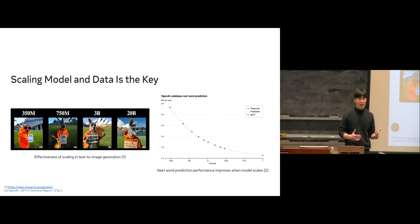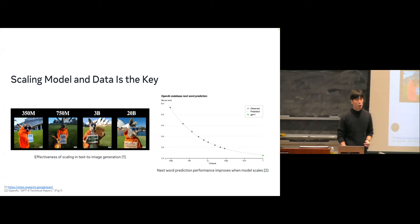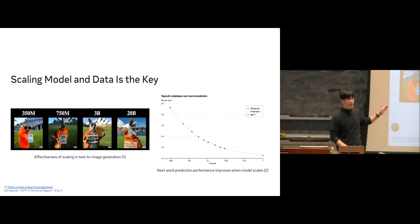A chart from the OpenAI GPT-4 technical report shows the vertical axis is perplexity for predicting the next token, and the horizontal axis is compute. With increasing compute, you get more accurate next-word prediction. This summarizes how scaling both data and model leads to more emerging capability and much stronger models than ever before.